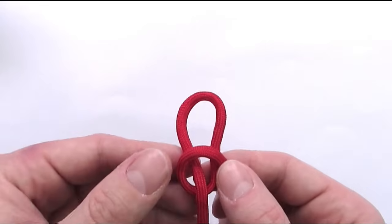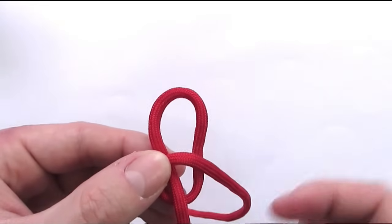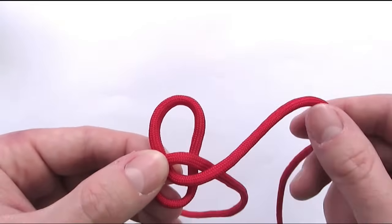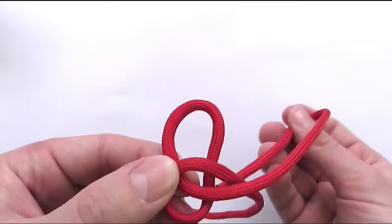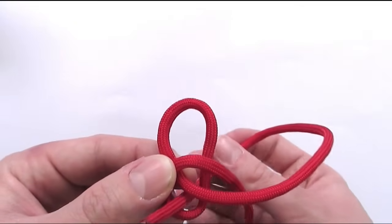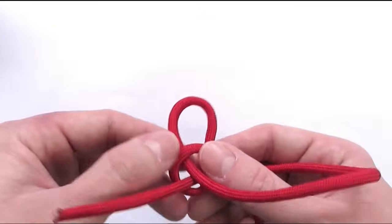And then using the left strand I'm going to pass over the right strand here and go under and through the loop made with the right cord. Then simply pull out the slack.